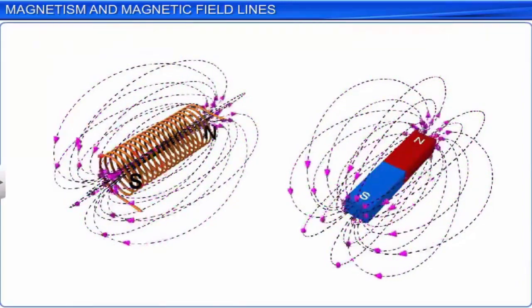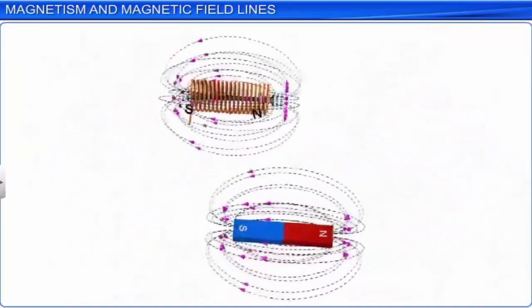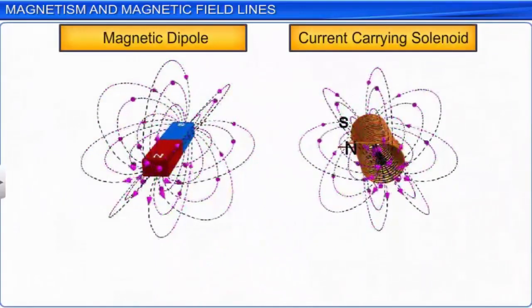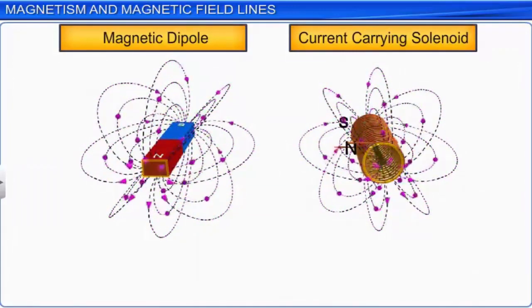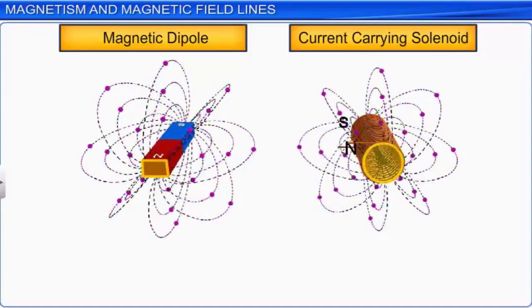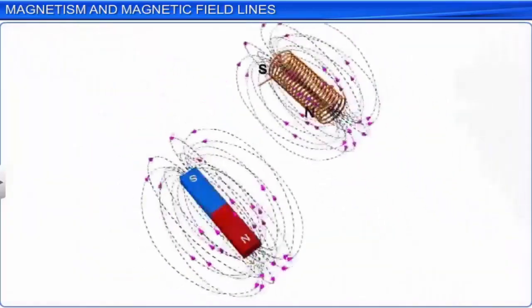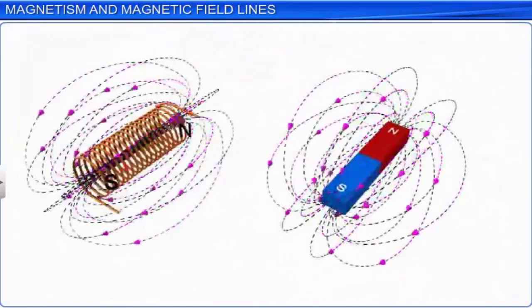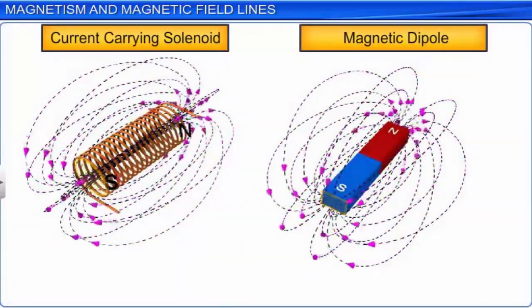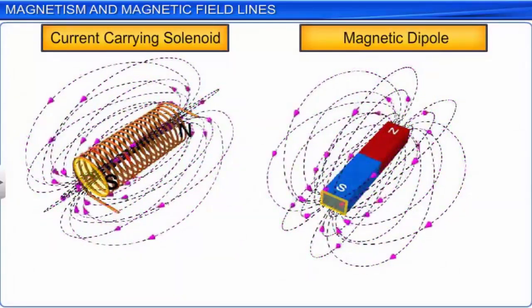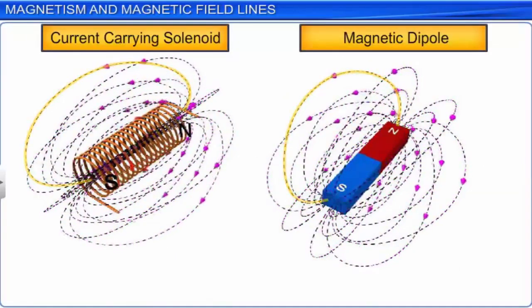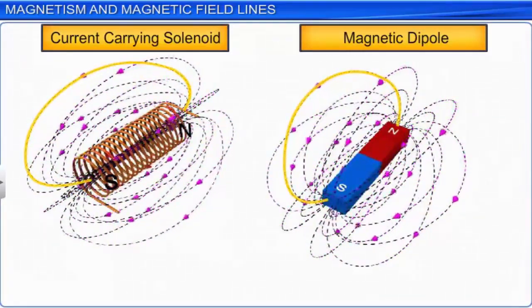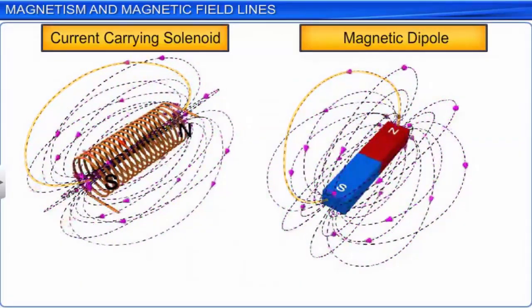The two faces of the solenoid are similar to the poles of a bar magnet. The field lines leave one face of the solenoid into its exterior, and hence this face of the solenoid is like the north pole of the bar magnet. The field lines enter the solenoid at the other face, and hence this face is like the south pole of the bar magnet. Thus, the magnetic field lines of a solenoid are continuous closed loops similar to the field lines in the case of a bar magnet.